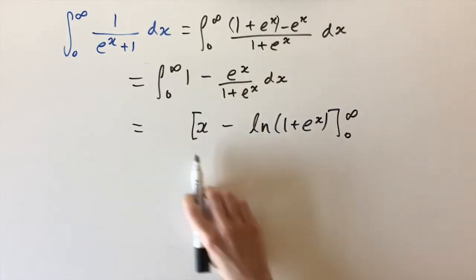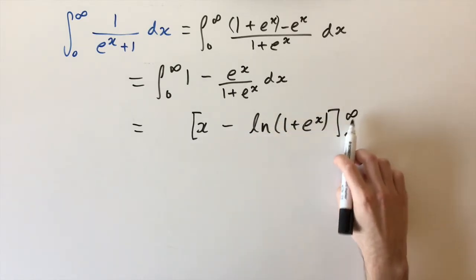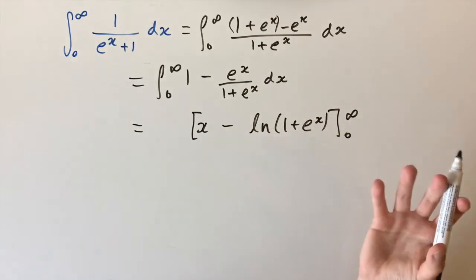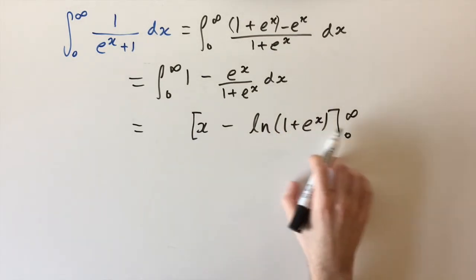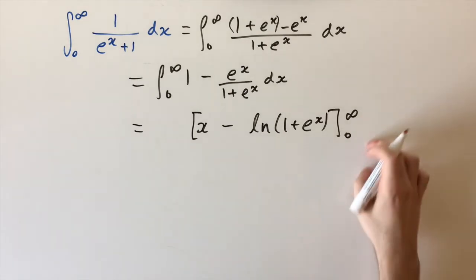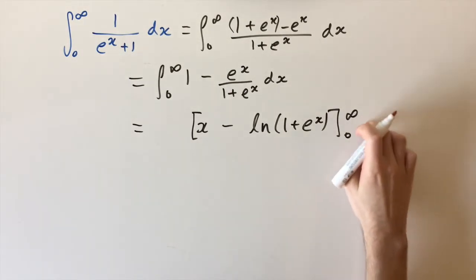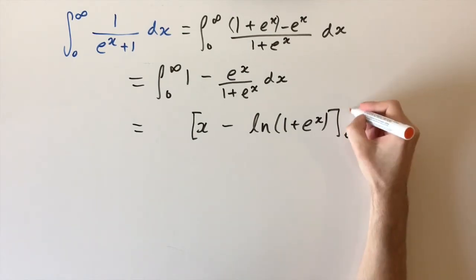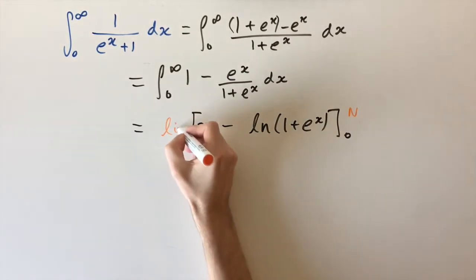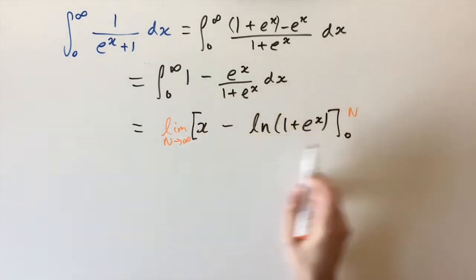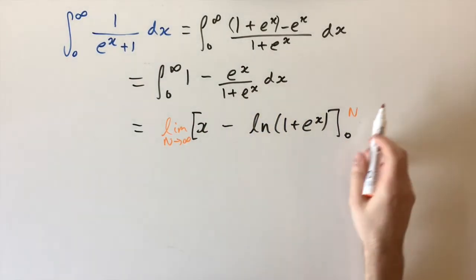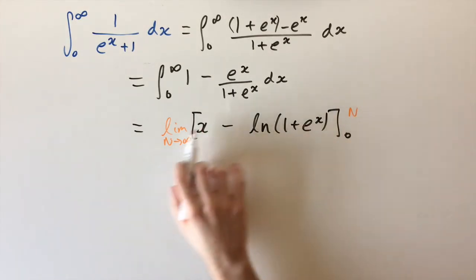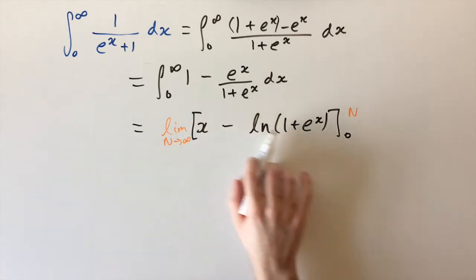The problem is we can't just input infinity into this expression because we'd get infinity minus infinity. But we can interpret this differently — what does the limit of infinity actually mean? We can interpret it as the limit as n goes to infinity of just n, which is the same as infinity, so instead of having infinity minus infinity we can understand this as a limit of two terms.